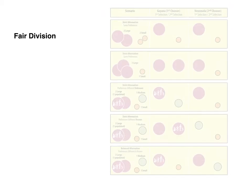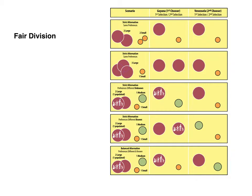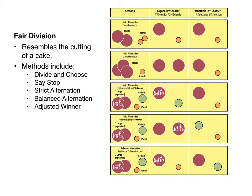This is called Fair Division, and here is Figure 15.2 from the book. Fair Division resembles the cutting of a cake in terms of natural resources and capital, and there are various different methods to cut this cake. Your book goes into quite a bit of detail on each of these methods — I'll just go over these hopefully rather quickly.